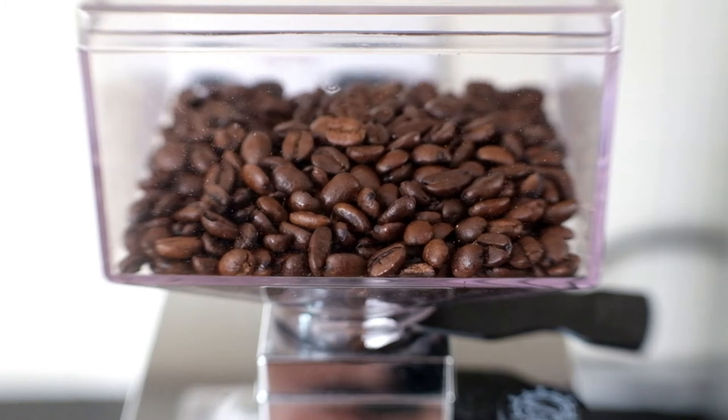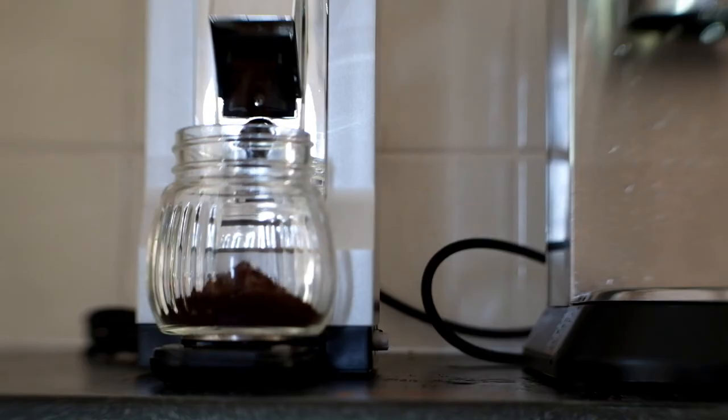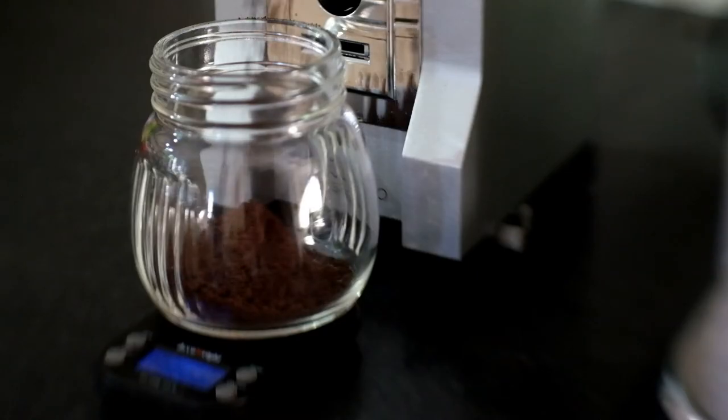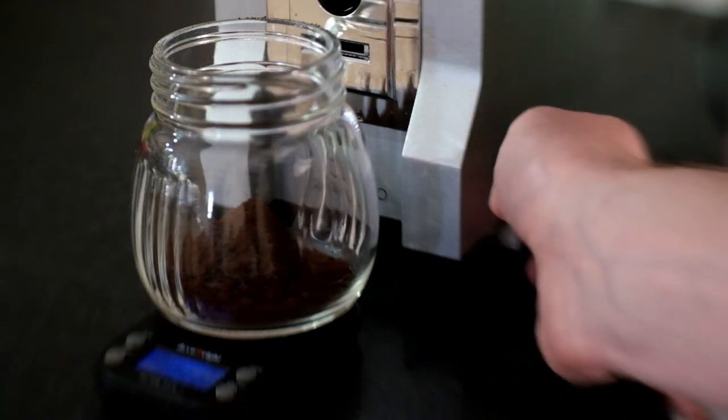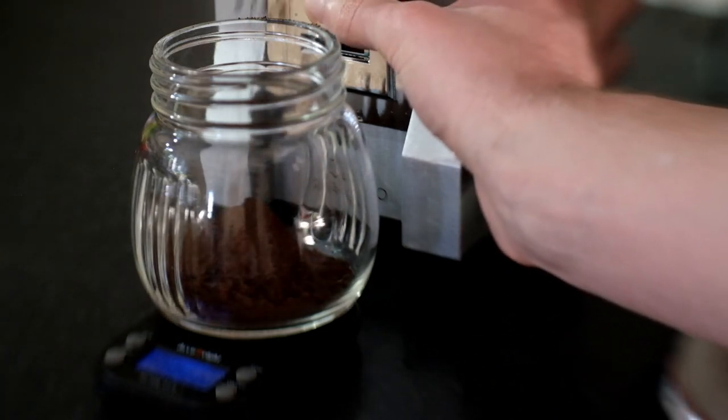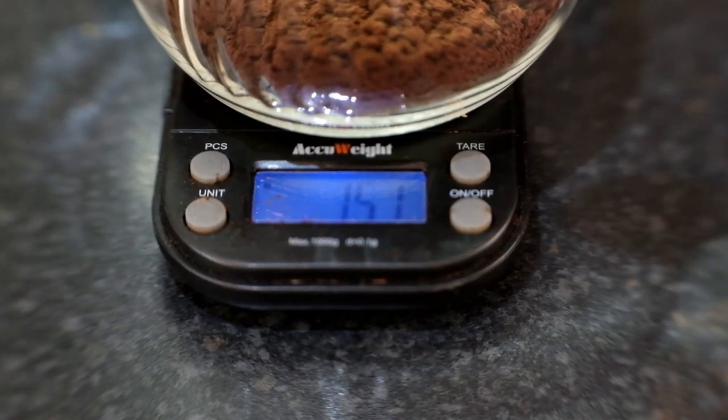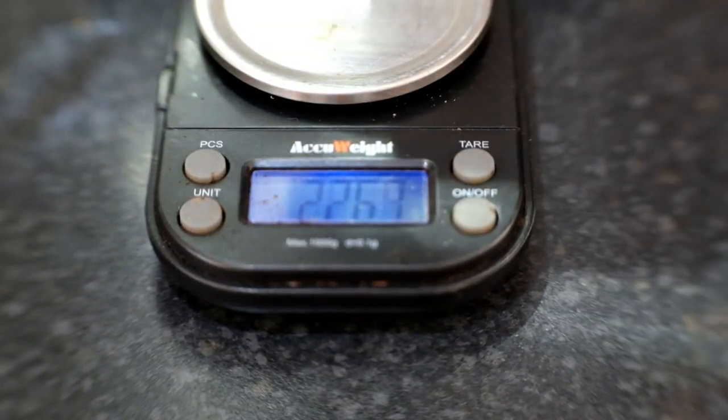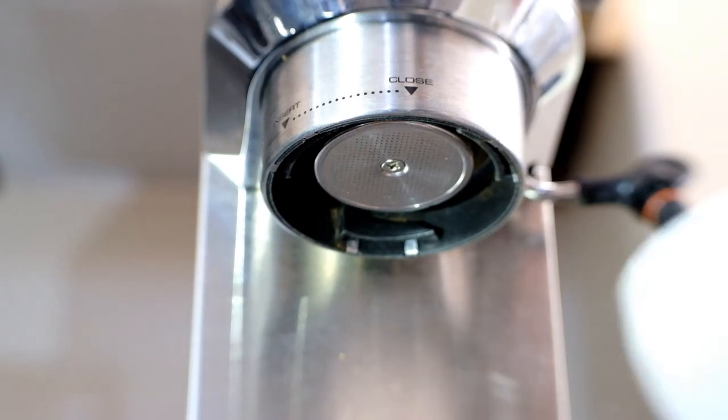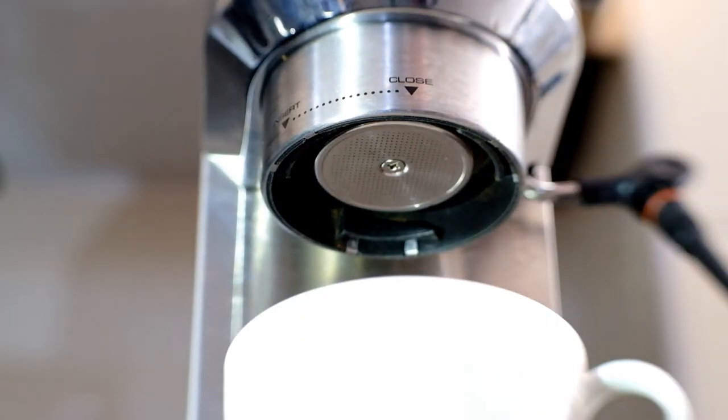When I'm grinding, I'm tending to aim for about 15 grams, and that's largely to do with two things. One, the basket which takes up to 18 grams, but if you go with 18 grams it overfills the basket. But if you go with less than 16 grams, the basket does taper slightly, and so the tamper tends to get stuck when you're trying to tamp in there.